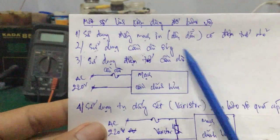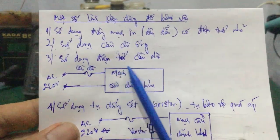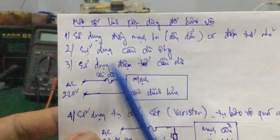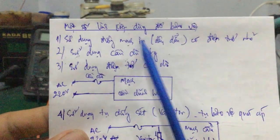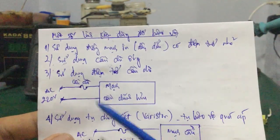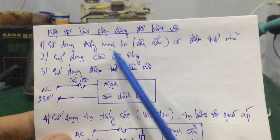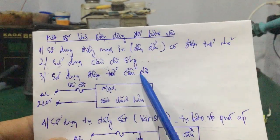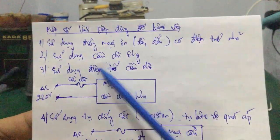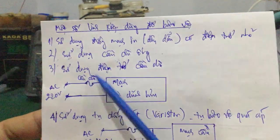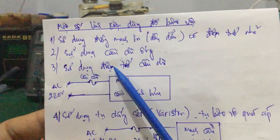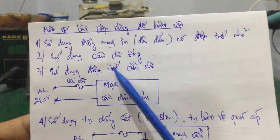Tiếp theo mình sẽ nói vào cái phần tử thứ 3, đó là sử dụng cái con điện trở cầu chì. Thì tương tự như cái phần tử số 2 là cái dùng cầu chì ống, con điện trở cầu chì này cũng tác dụng giống như cầu chì ống. Có nghĩa là những cái điện trở cầu chì này có giá trị điện trở khá nhỏ. Khi mà trong mạch có cường độ dòng điện lớn chạy qua, thì sẽ làm đứt cái điện trở cầu chì này. Thì cái tác dụng của điện trở cầu chì với cầu chì ống này tương đương nhau.